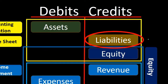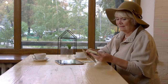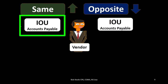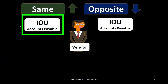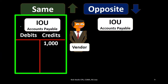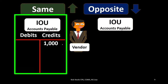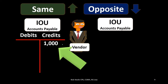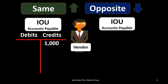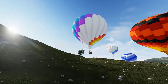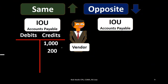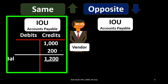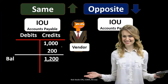Now we'll focus on liabilities, which have a credit balance. We'll focus here on accounts payable — representing purchasing something and paying for it on account, meaning we didn't pay cash, we have an IOU and owe something in the future. Accounts payable always starts with a credit. Starting with an arbitrary $1,000 — meaning we owe somebody $1,000 from a past transaction — if we purchase something on account, accounts payable needs to go up. Doing the same thing as its normal credit balance, we credit it, and $1,000 plus $200 gives us a $1,200 credit balance.